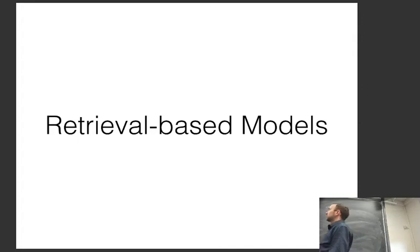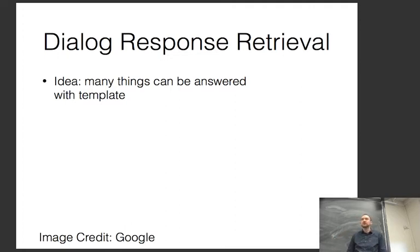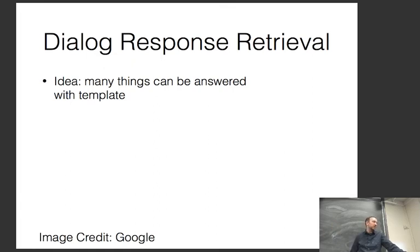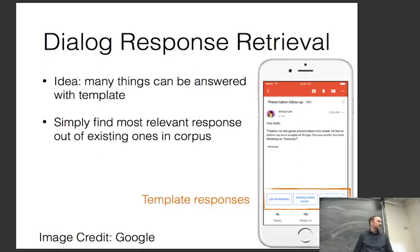Now let me go on to retrieval-based models. Retrieval-based models are based on the idea that many things can be answered with template responses — a lot of what we say, like 'I don't know,' is repeated over and over again, so there's no need to generate them anew. You can simply find the most relevant response. Has anyone seen these suggested responses in Gmail on your phone? These appeared about a year ago based on a neural retrieval-based model.